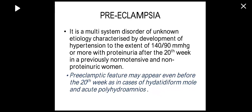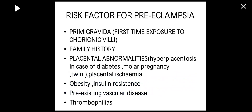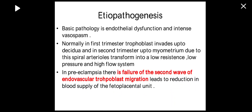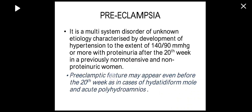Risk factors for preeclampsia include: primigravida — first-time exposure to chorionic villi — family history, placental abnormalities, diabetes, molar pregnancy, obesity, insulin resistance, pre-existing vascular disease, and thrombophilias.